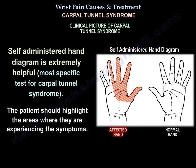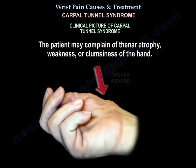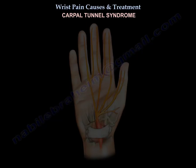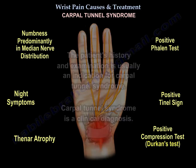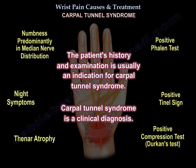A self-administered hand diagram is extremely helpful and is the most specific test for carpal tunnel syndrome. The patient highlights areas where they are experiencing symptoms — to the right is a normal hand, and to the left is the affected hand. The patient may complain of thenar atrophy, weakness, or clumsiness of the hand. Carpal tunnel syndrome is a clinical diagnosis.